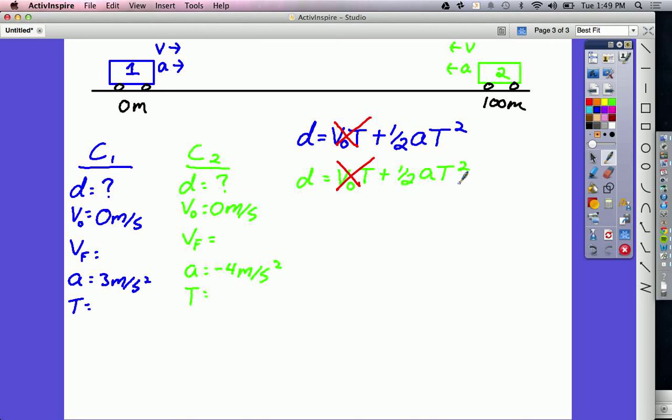This is one of those problems when we have two objects, one starting over here on the left, the other starting on the right, that the difference between distance and displacement is very, very important. Displacement is how far an object is from a particular starting point. It's almost like the whole problem is on a number line, where 0 is the point directly underneath car 1, and way over here, 100 meters away, is where car 2 is on the number line.